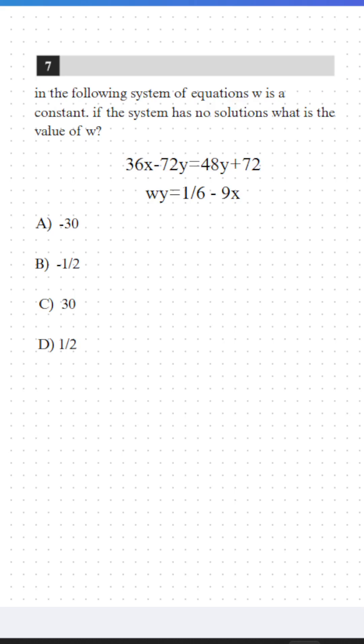Can you solve this difficult SAT question? In the following system of equations, w is a constant. If the system has no solutions, what is the value of w?